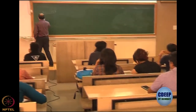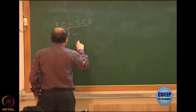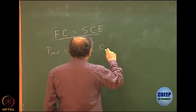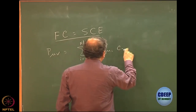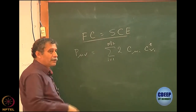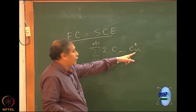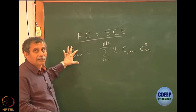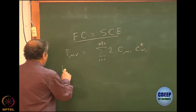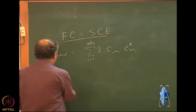We define P_μν as a matrix which is the sum over molecular orbitals i equal to 1 to N/2 of 2 times C_μi and C_νi star. This was the definition of the charge density bond order matrix where the summation was over the molecular orbitals. The final index of the molecular orbital does not appear; it is only the atomic orbital. We can write the entire expression of the Fock matrix in terms of F_μν.